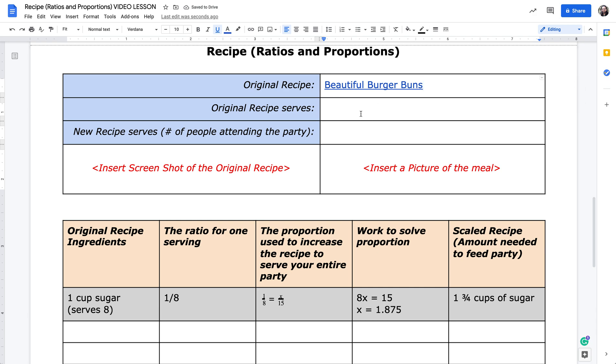I will then type the original recipe servings, which was eight, followed by the new amount of servings I'm changing the recipe to, which is 12.